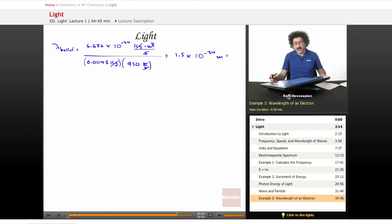So there you go. You have a bullet that's a standard bullet, 4.5 grams. It's traveling at 950 meters per second. There's actually a wave associated with the energy.